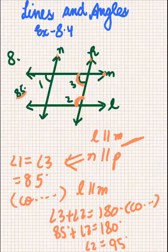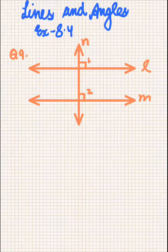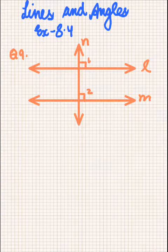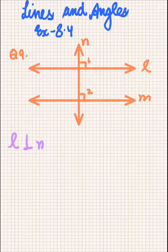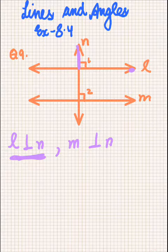Now let's do question number 9, which says: if two straight lines are perpendicular to the same line, prove that they are parallel to each other. Let lines L, M, and N be such that L is perpendicular to N and M is perpendicular to N. Since L is perpendicular to N, angle 1 will be equal to 90 degrees.